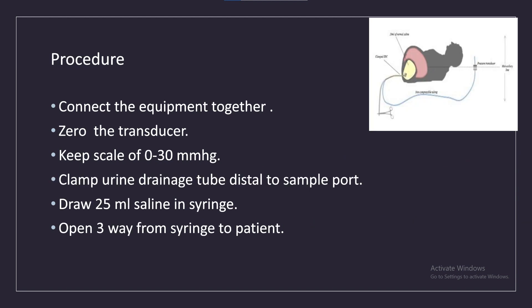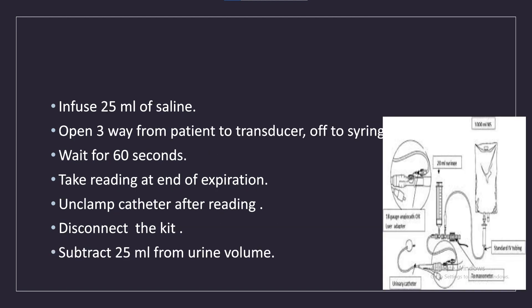Procedure: Connect the equipment together and zero the transducer. Keep scale of 0 to 30 mmHg. Clamp the urine drainage tube distal to the sample port. Draw 25 mL saline in the syringe. Open the three-way from the syringe to infuse 25 mL of saline. Open the three-way from patient to transducer, off to syringe. Wait for 60 seconds and take the reading at end of expiration.